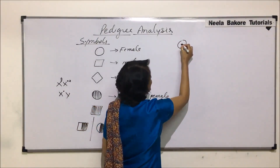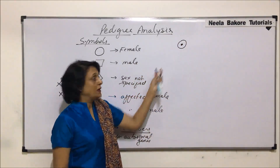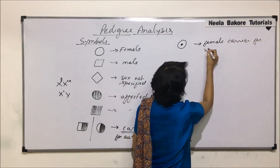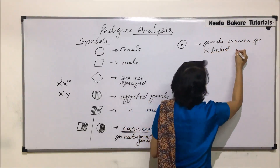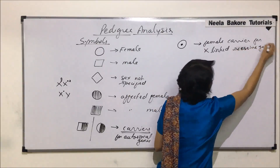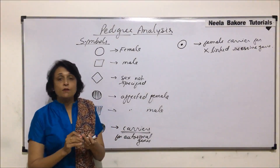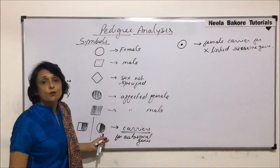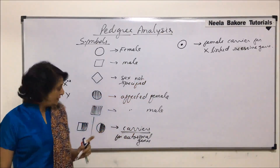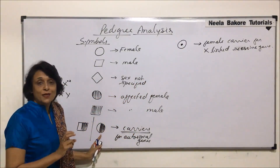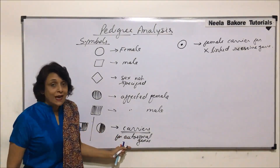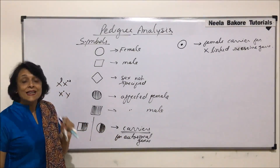How do we represent a female who is a carrier for a sex chromosomal gene? There is a specific symbol for a female carrier for X-linked, or sex-linked, inheritance. Whenever we draw pedigrees, the same half-filled circle symbol is often used for carrier females even in sex-linked inheritance. But technically, the half-filled square represents a male carrier only for autosomal genes, since males cannot be carriers for sex-linked recessive genes.